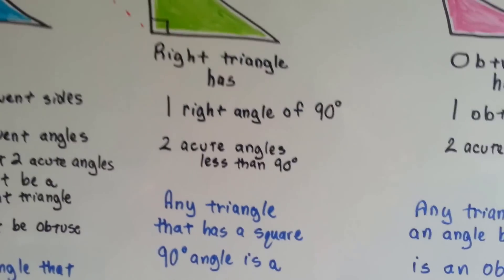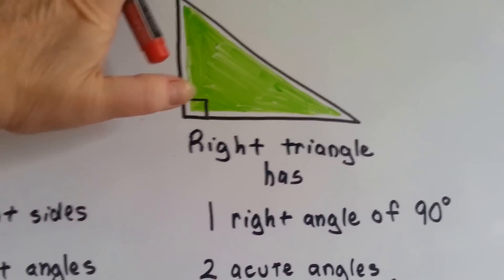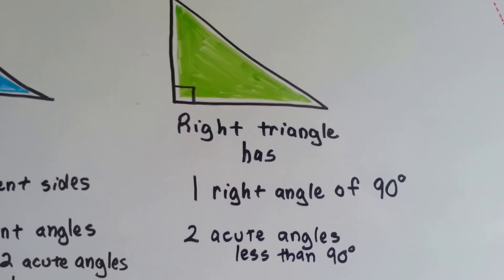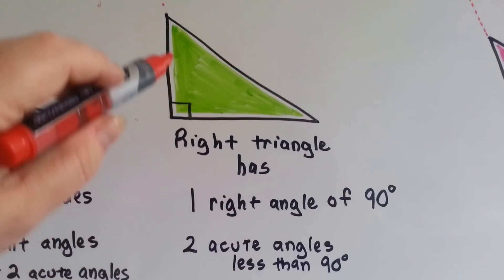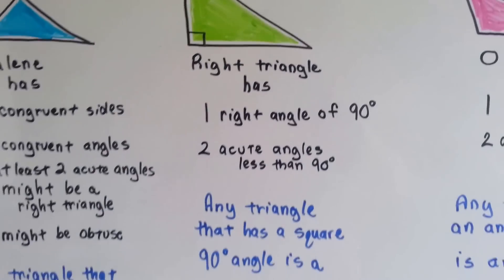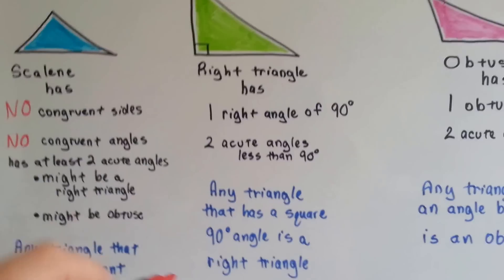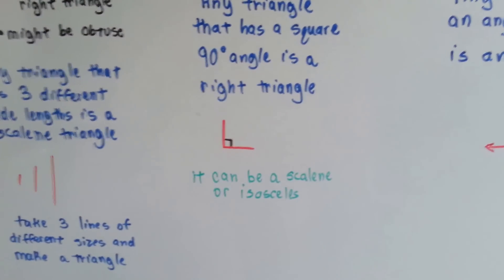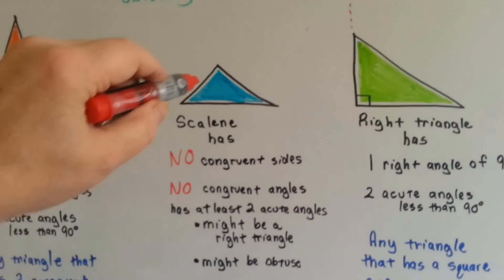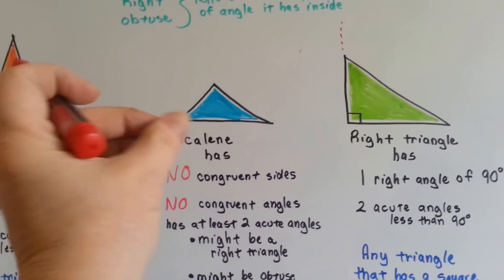A right triangle has a 90-degree angle and two acute angles that are less than 90 degrees. See? It makes this little box here. Any triangle that has a square 90-degree angle is a right triangle, and it can be scalene or isosceles — because this could be a right triangle on a scalene, or it could even be bigger.